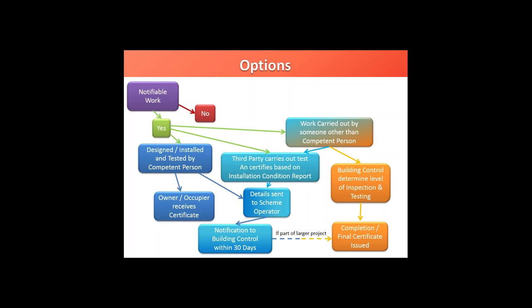The person carrying out the work sends details to a scheme operator — they have to be signed up to an accreditation scheme which assesses their competence and maintains records. At the same time, the person carrying out the work gives a certificate to the owner and occupier of the building. Building control becomes aware of this some 30 days later when the scheme operators send through a notification. This works perfectly adequately where the electrical work is the only work being carried out, but if it's part of another project, this 30-day delay can cause difficulty when trying to issue completion or final certificates under building regulations.